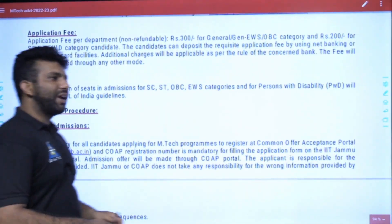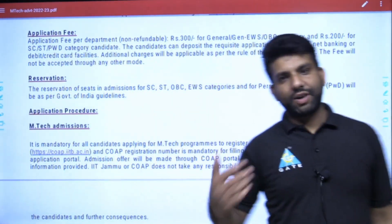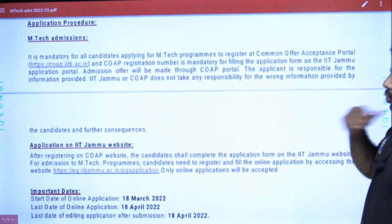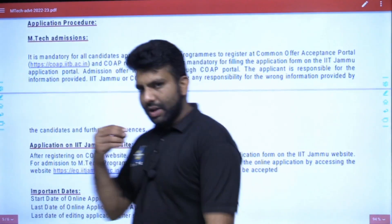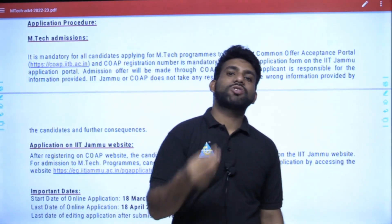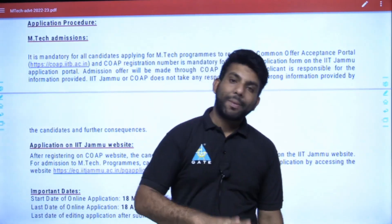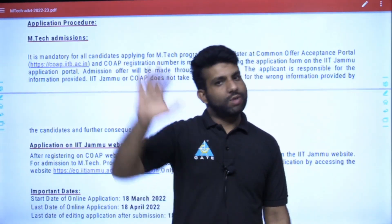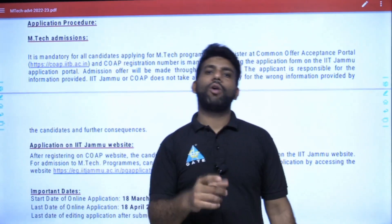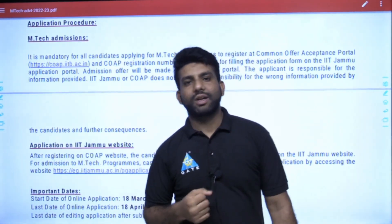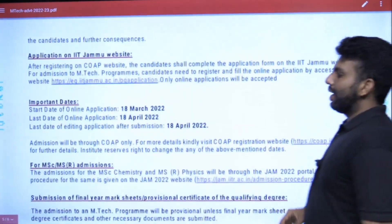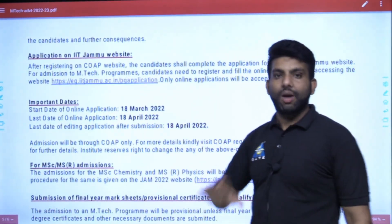Regarding the application fee — it is 300 rupees for General, EWS, and OBC candidates, and 200 rupees for the rest. As I have told you before, CVP registration is required for every IIT — that is the Common Offer Acceptance Portal. All your offers will be given through CVP, so you need your CVP registration number when applying to each IIT. April 18 is your last date — apply before that.